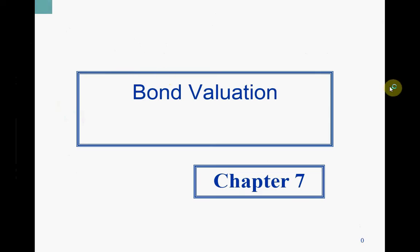Today we move to a new chapter — chapter number seven, Bond Evaluation. This is right after chapter five, Time, Value, and Money. These two chapters are so connected together because in this new chapter, you need to rely on the Time, Value, and Money solving technique to get the value of a bond.